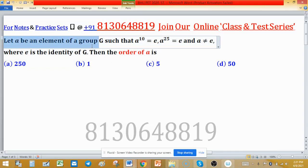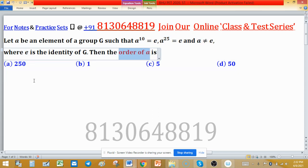Let A be an element of a group G such that A raised to the power 10 is identity and A raised to the power 25 is also identity, and A is a non-identity element. Then the order of element A is: